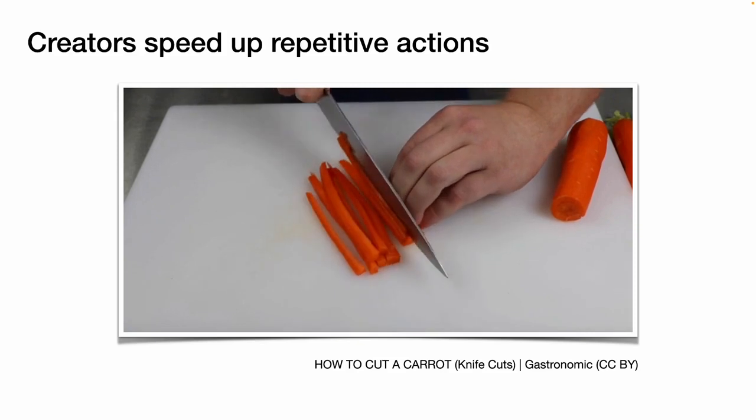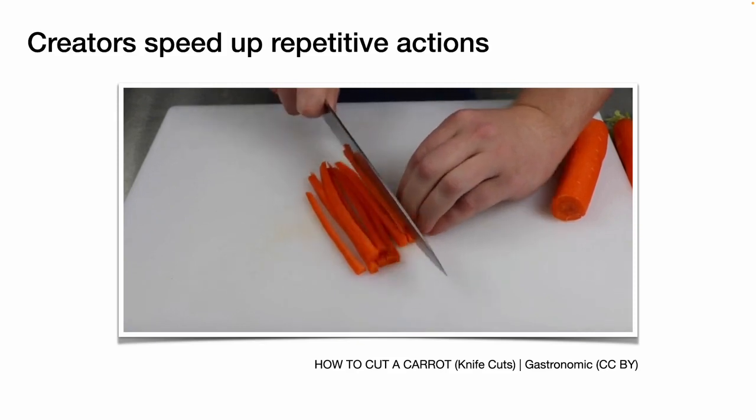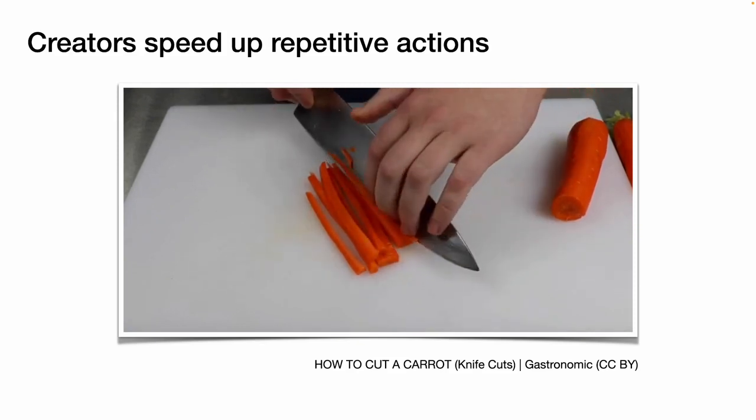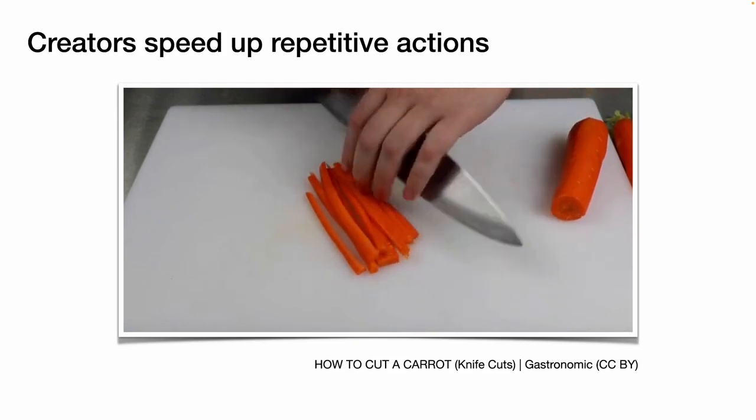After this, I am going to rotate the carrots 90 degrees to complete the small dice cut.